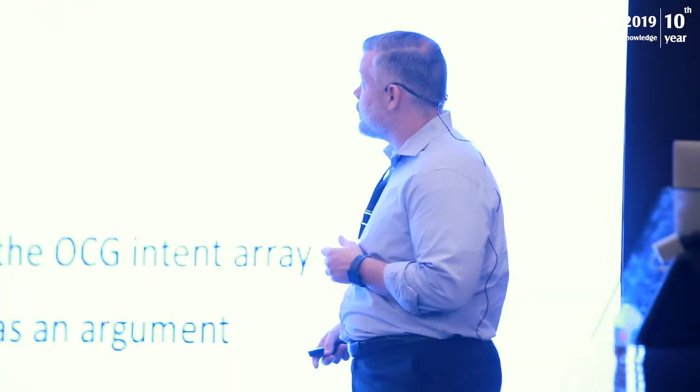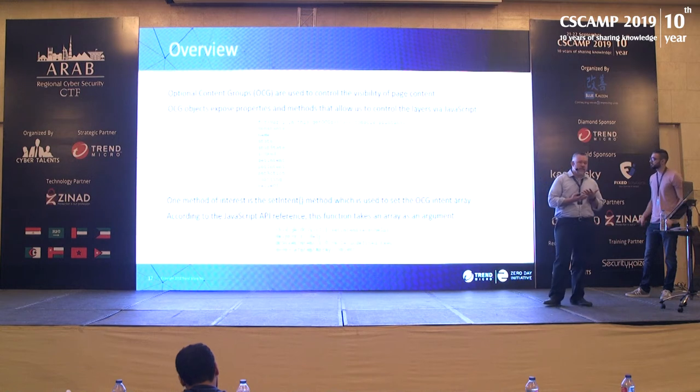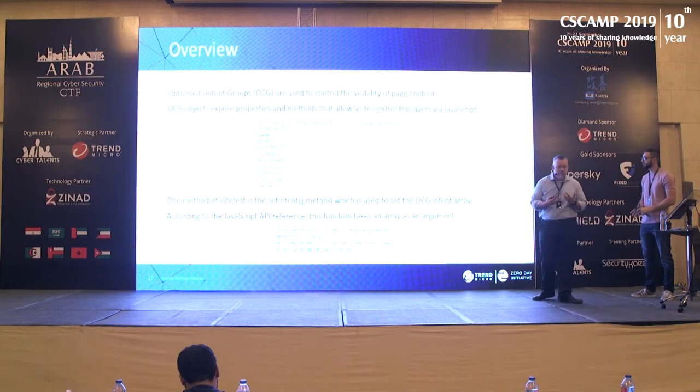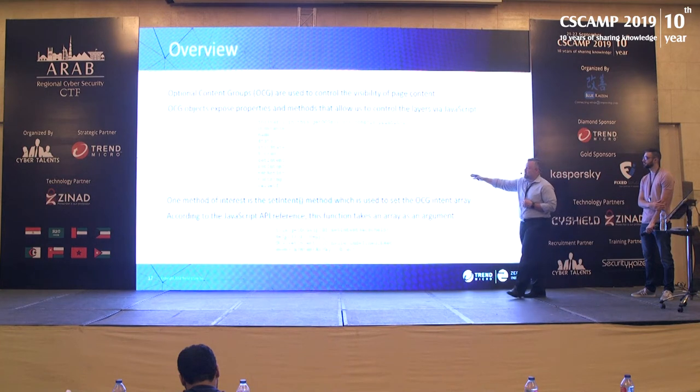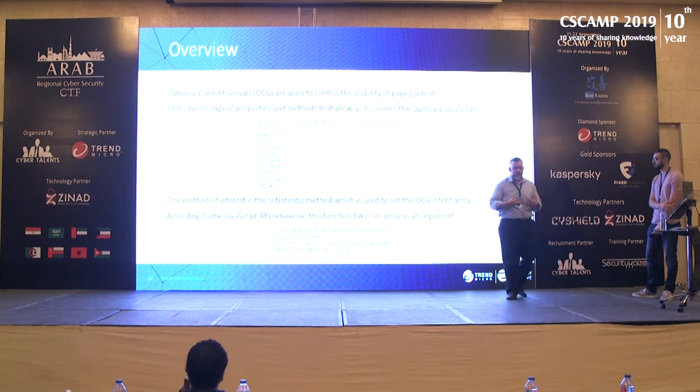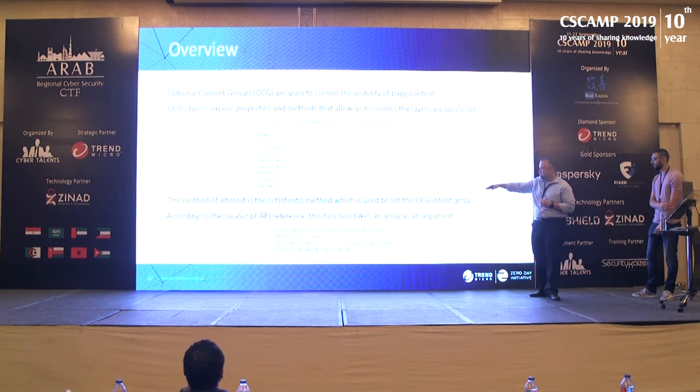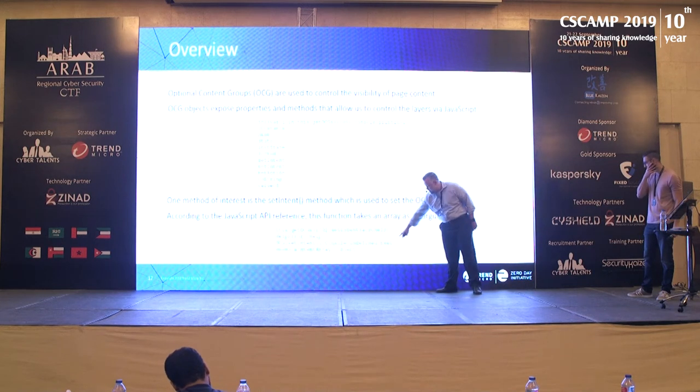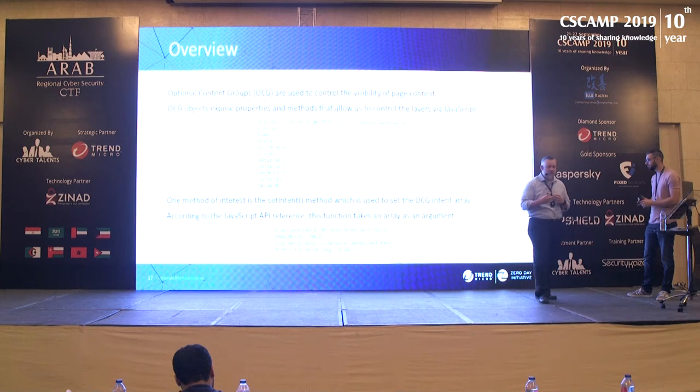Now we're looking at OCG — Optional Content Groups — which you can think of as layers in a document that you can turn on and off. They're useful for things like CAD drafting or language conversions, where you can have one layer in Arabic and one in English. This for loop shows how to get all the different methods off an OCG object, and one of those is setIntent, which takes an array as a parameter.